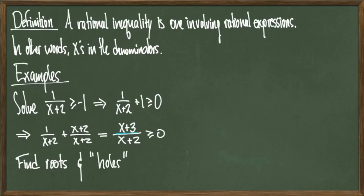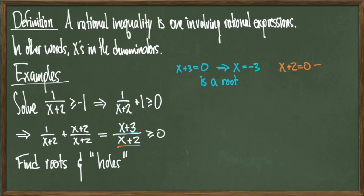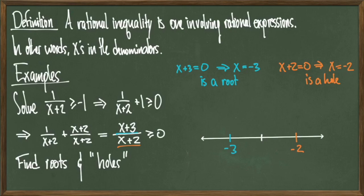The thing about holes is we need to avoid those completely because we can't divide by 0, so we need to avoid x values that force my denominator equal to 0. To find the roots, I take the numerator x plus 3, set it equal to 0, and solve for x to find that x equals negative 3 is a root. Since the numerator is linear, there is only one root. To find the holes, I take the denominator and set it equal to 0, and I find that x equals negative 2 will force my denominator to be 0.